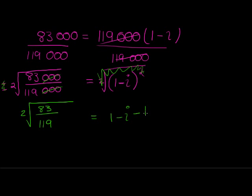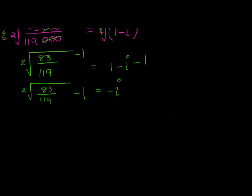So I'm going to subtract the 1 on both sides. So I'm left with negative I is equal to the square root of 83 over 119 minus 1. So what this is telling me is then when I take this value and I subtract a 1, I get a negative answer. Which means if I take 1 minus that value, in other words, I just swap these two terms around, I will get a positive answer.